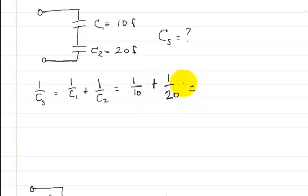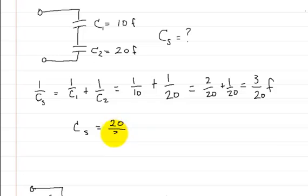And well, you just have to add these together. So you're going to get 2 over 20 plus 1 over 20 is equal to 3 over 20 farads. So the capacitance in series is equal to 20 over 3 farads. And that's what the capacitance is. So let's go on to the next one.